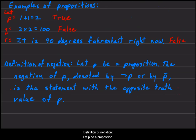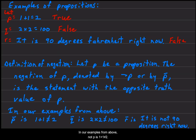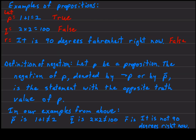Definition of negation. Let P be a proposition. The negation of P, denoted by the arrow in front of the P or by the line over the P, is the statement with the opposite truth value of P. In our examples from above, not P is '1 plus 1 is not equal to 2'. The negation of Q is '2 times 2 is not equal to 100'. And the negation of R is 'it is not 90 degrees right now'.